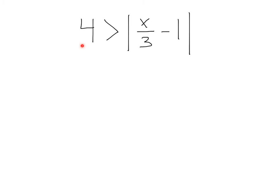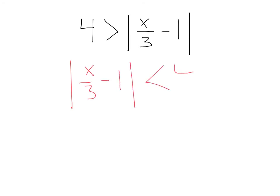Let's do one more. Here we've got 4 is greater than absolute value of x over 3 minus 1. Now, we could solve it like this, but remember, a lot of times people like to see the variable on the left side — it's just typically a little easier. So I'm going to rewrite this as absolute value of x over 3 minus 1 is less than 4. Just because for most people, it's a little better of a format to comprehend. So going from here, x over 3 minus 1 is less than 4 spaces from 0.